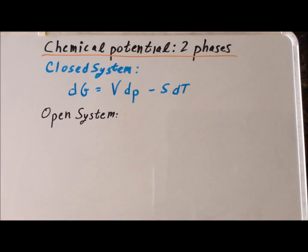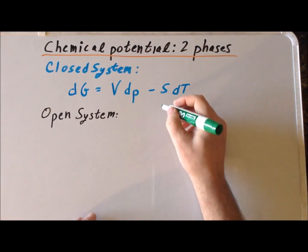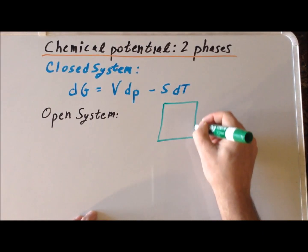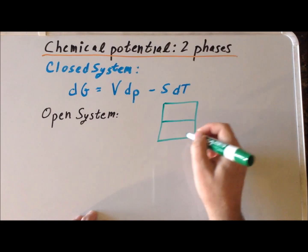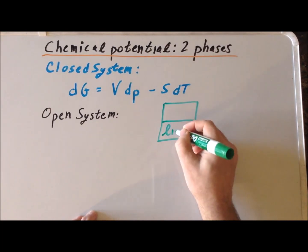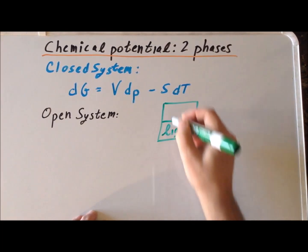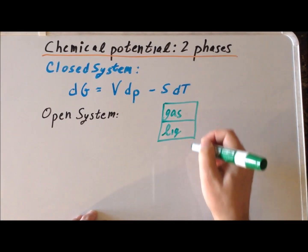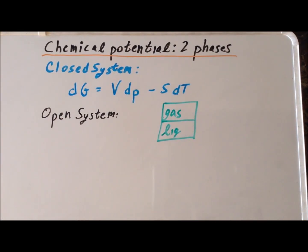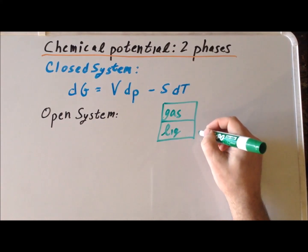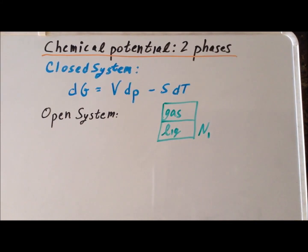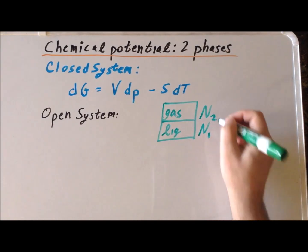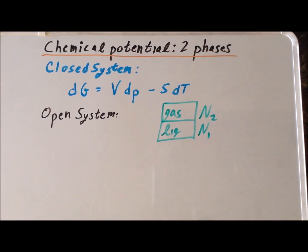Now let us imagine an open system with two phases. As an example, we can have a system where we have a liquid, and we also have the same chemical in the gas phase. Let us also assume that the number of molecules in the liquid is n1, and the number of molecules in the gas phase is n2.